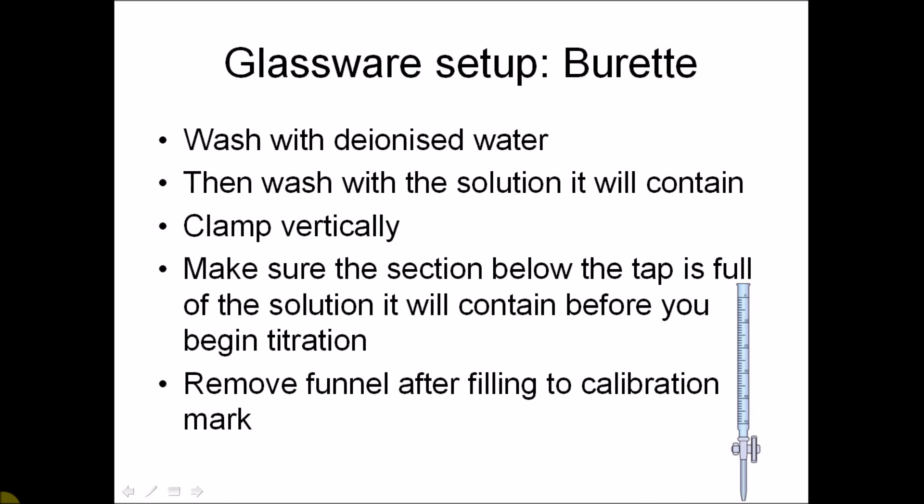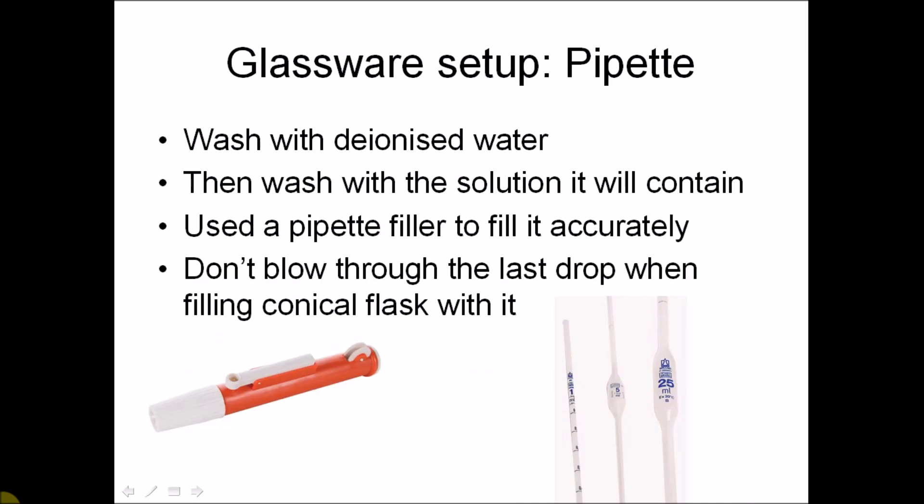Before I talk about titrations, I'm going to talk about setting up all the glassware. For the burette, first wash it with deionized water and then with the solution it's going to contain. Don't forget to remove the funnel after it's filled to the 0 cm³ mark. For the pipette, also wash it with deionized water and then with the solution it's going to contain. Make sure you don't blow through the last drop when emptying its contents, because that last drop isn't taken into account for the measurement.